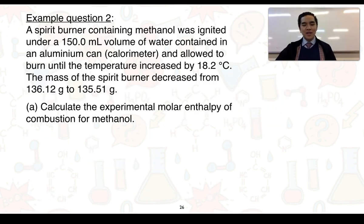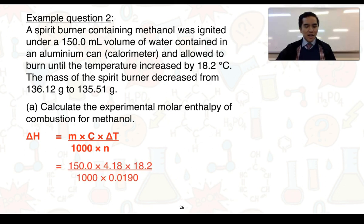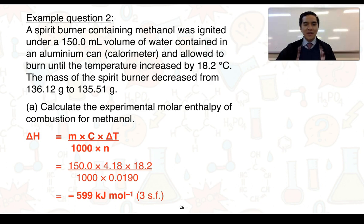Using the information from the previous slide, we can now calculate the experimental molar enthalpy of combustion of methanol using the formula: ΔH = (m × c × ΔT) / (1000 × n). Substituting all values in and ensuring the number of moles is exactly what we have in our calculator, we end up with a value of negative 599 kilojoules per mole to three significant figures.